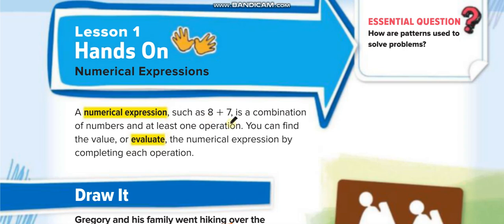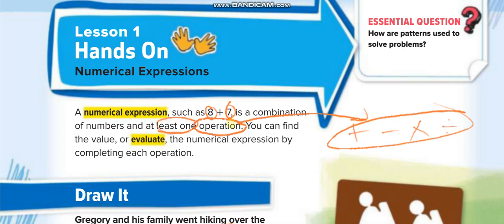All of you know that plus, minus, multiply, or divide—all these are operations. So anything which have numbers, like this expression, have numbers and at least one operation. It could be more. So it means it is a numerical expression. There could be more, like 8 plus 7 minus 1, right?